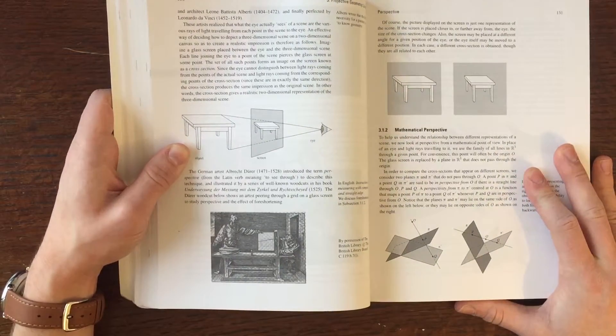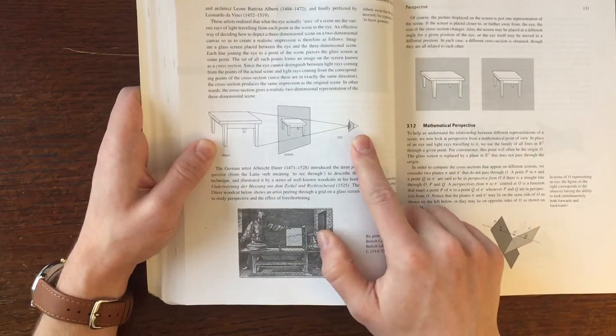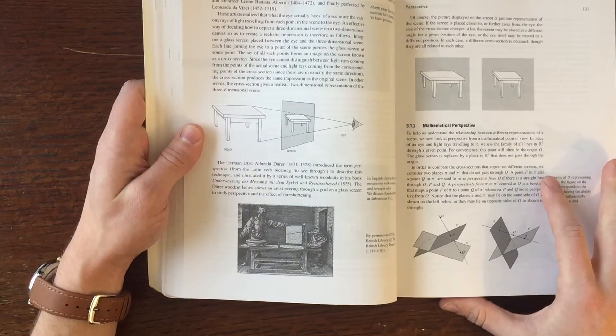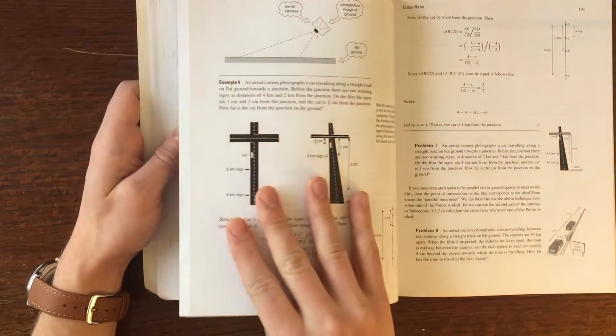Here's some projective geometry stuff. It talks about how our eyes actually see the world as a two-dimensional projection of a three-dimensional object. Pretty cool stuff.